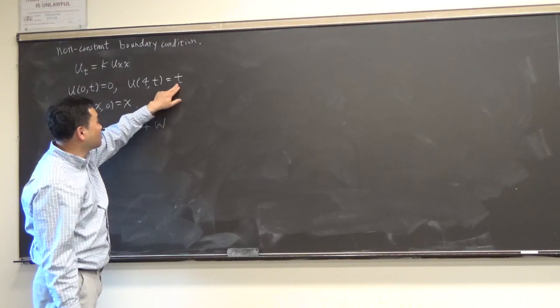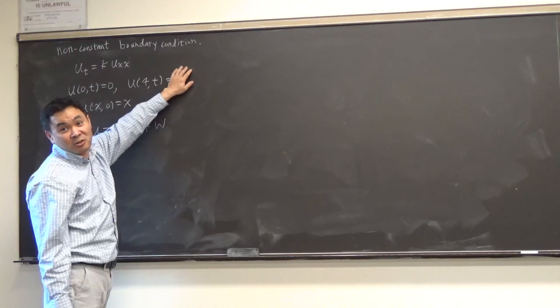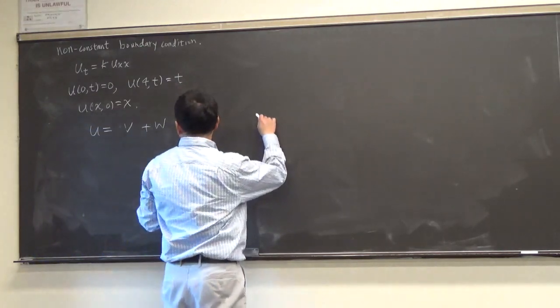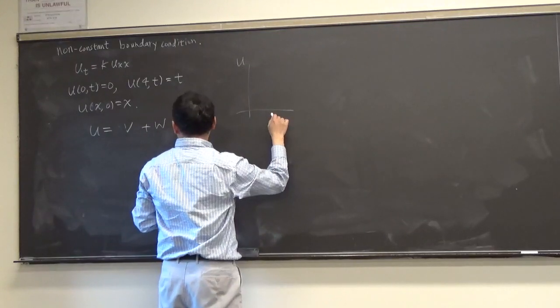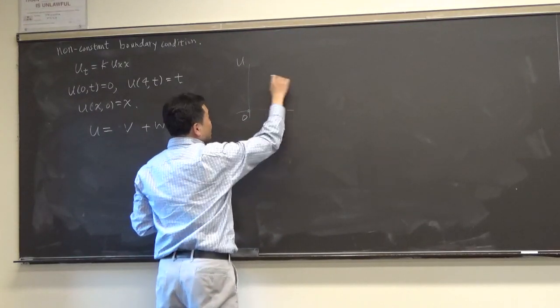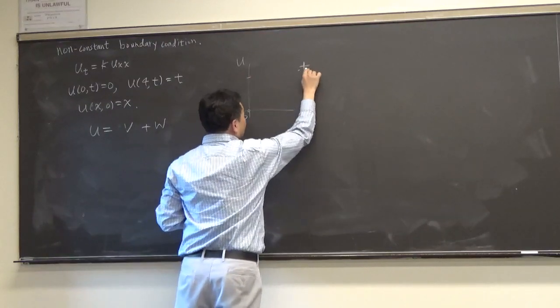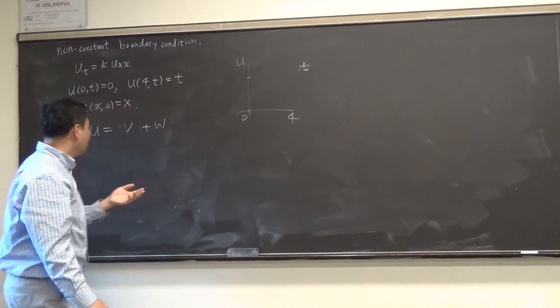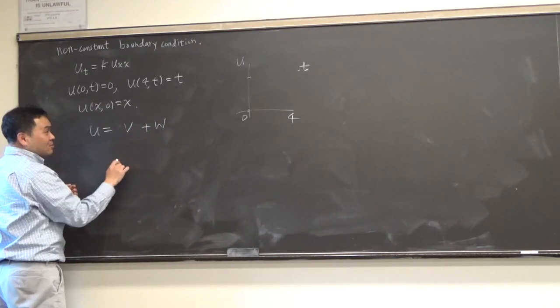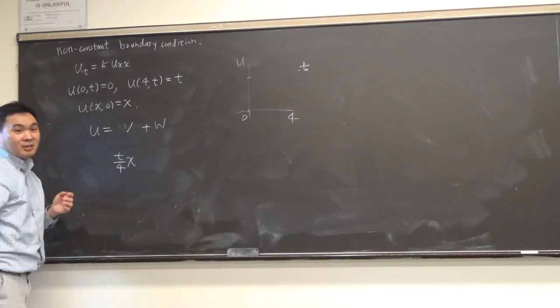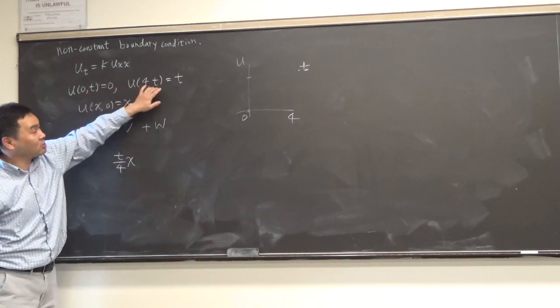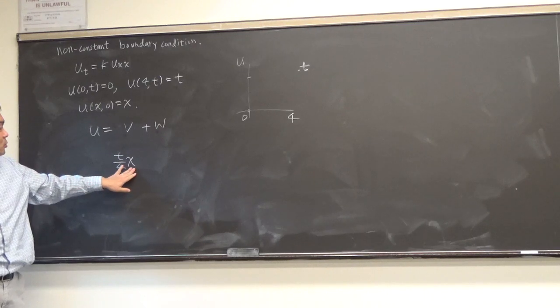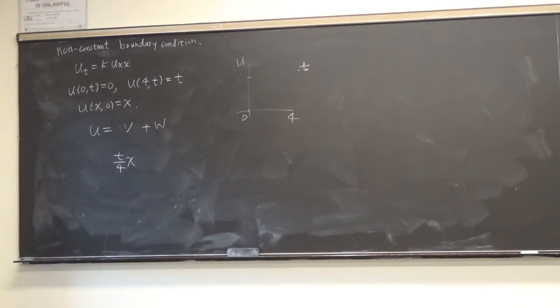And we can come up with a similar idea as before. See, before when this was 20, we said 5x is a good one because it gives you a straight line, right? So here, u is like zero at zero and t at 4. So what's the slope? t over 4. So we just set this thing as t over 4 times x. And this immediately satisfies both boundary conditions, right? So when you plug in x is zero, it satisfies this. If you plug in x is 4, it satisfies this. Seems like a very good answer.